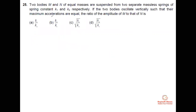Two bodies M and N of equal mass are suspended from two separate massless springs of spring constants k1 and k2 respectively. If the two bodies oscillate vertically such that their maximum accelerations are equal, find the ratio of their amplitudes — amplitude of M to that of N.